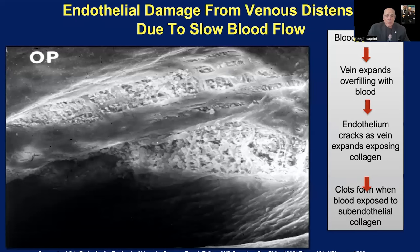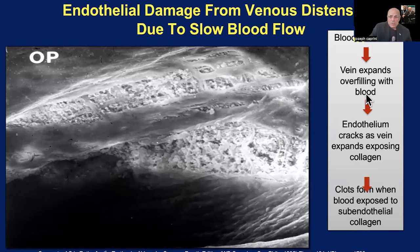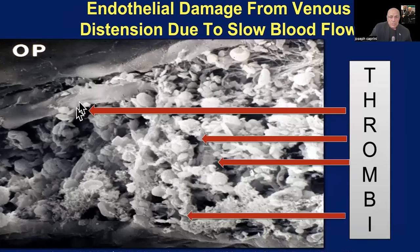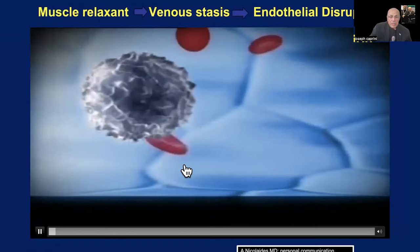Here's a million-power micrograph of a dilated capillary from an experiment showing the endothelial cracks. As the vein expands and overfills with blood, endothelial cracks develop, and then clots form in the exposed collagen. Here you can see the exposed collagen and how clots can form in that area.